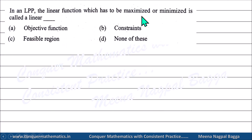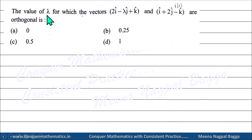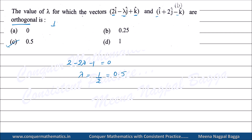In an LPP, the linear function which has to be maximized or minimized is called the objective function - direct question, answer is objective function. Next: Value of λ for which vectors are orthogonal. Orthogonal means perpendicular - dot product = 0. Calculating: 2×1 + (-λ)×2 + 1×(-something) = 0, solving gives λ = 1/2.